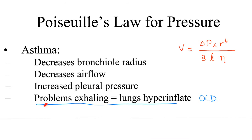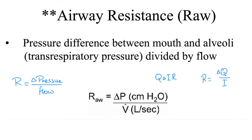Asthma is an obstructive lung disease — I cannot get the air out, so the lung will hyperinflate. Analogous to Ohm's law in physics: R = ΔP/flow. In the alveoli, resistance = change in pressure / flow. If resistance increases, flow decreases. So increased airway resistance means decreased airflow.